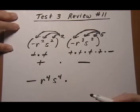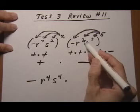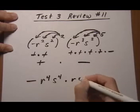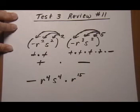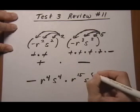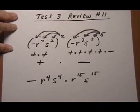Times the result of the second parentheses, r cubed to the fifth, power to power. So I multiply the exponents, and same with the s. s to the 3 times 5 is s to the 15.